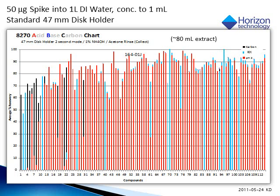Here is the recovery chart from the demonstration sample. The compounds are shown by elution order off the GC. The acids and neutrals are depicted by the red bars, compounds captured by the carbon cartridge are shown in black, and the blue bars are the organic bases. Overall recoveries are excellent, and light ends are captured exceedingly well compared to liquid-liquid extraction, including the phenols.